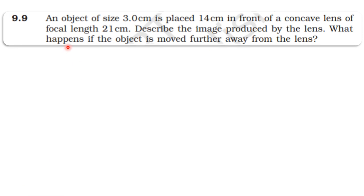From the textbook, topic ray optics and optical instruments. An object of size 3 centimeters is placed 14 centimeters in front of a concave lens of focal length 21 centimeters. Describe the image produced by the lens. What happens if the object is moved farther away from the lens? Object size 3 centimeters, object distance 14 centimeters in front of a concave lens, focal length 21 centimeters.